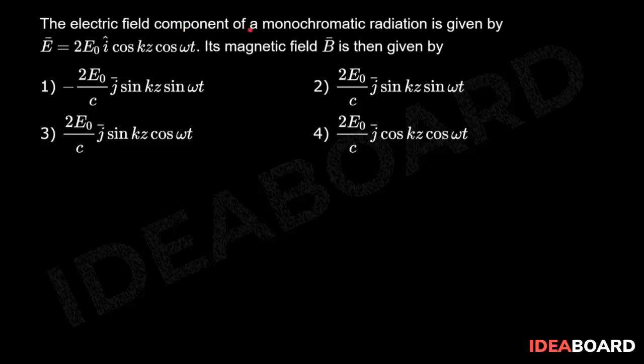The electric field component of monochromatic radiation is given by E = 2E₀ i cap cos kz cos ωt. Its magnetic field B is then represented by...